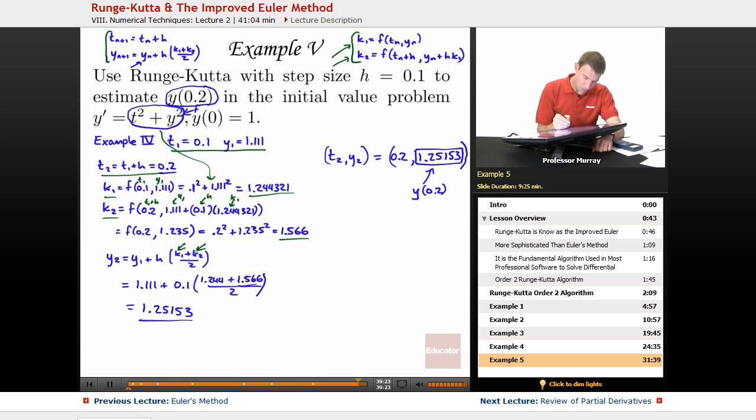And then I drop those in the formula for y2, drop those in right there. Multiply by h is 0.1 and I still have my y1. So, there's y1, there's h. Remember, I'm using this formula right here to figure out y2.